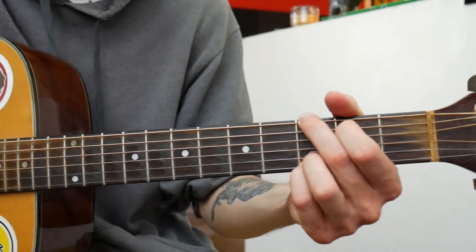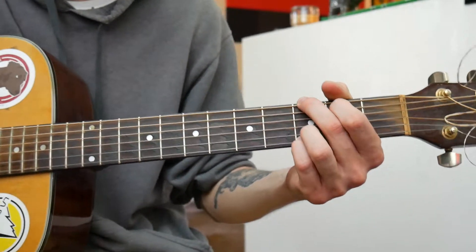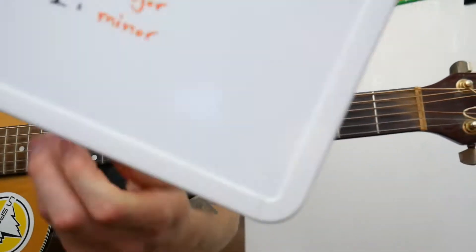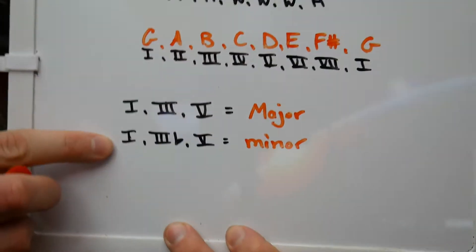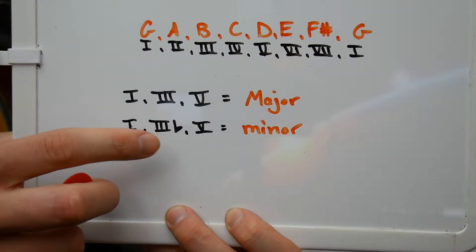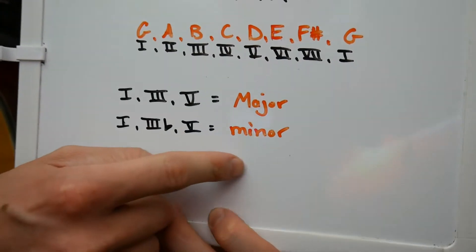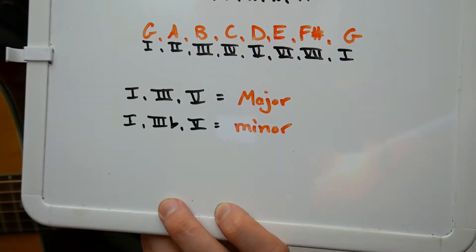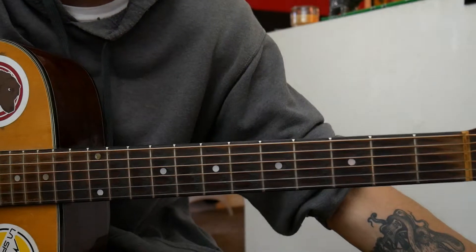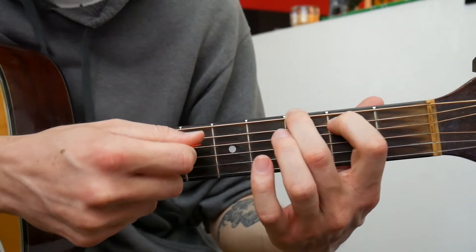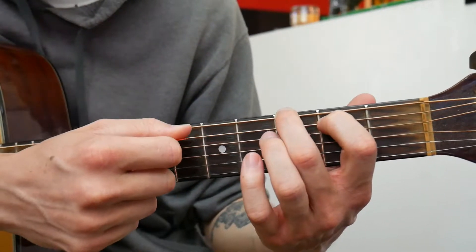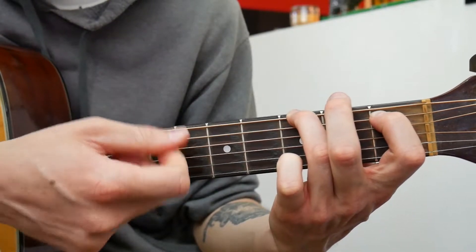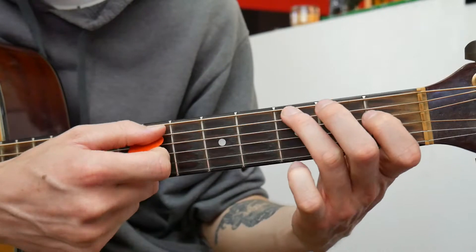That's how the G major chord is built off the G major scale. Now let's look at the minor chord. One-three-flat-five means we take G, B, and D and flat the third, which is the B. So we get G, B-flat, D. We take G B D and just drop the B down half a step to get G B-flat D — that's a G minor chord.